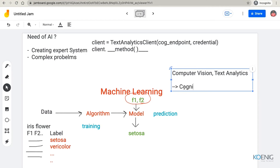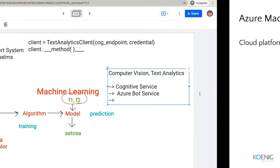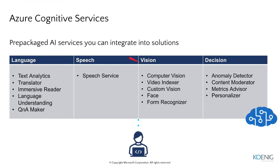It was cognitive service. And for example, if I want to make a bot, any service? One service for the bot — we had the Azure Bot Service. And one more service: cognitive service, under which if I want to go with computer vision, text analytics, speech, or decision — for all of these things, we can go with cognitive service. Various tasks are there.